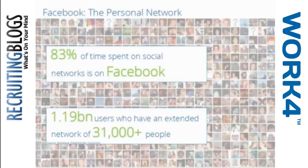83% of the time spent on social networks is on Facebook — every other social network is competing for 17% of everyone's time. It could be Instagram or Pinterest or whatever social network gives you the most value. This tells you it's close to a monopoly. Facebook globally is incredibly strong in almost every market except China, and the time spent on the network is incredibly engaging. The network reach of a user is pretty large — you're talking about a 31,000-person reach, two people away from you.